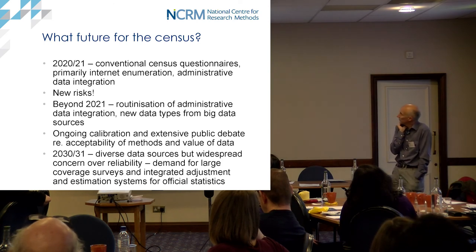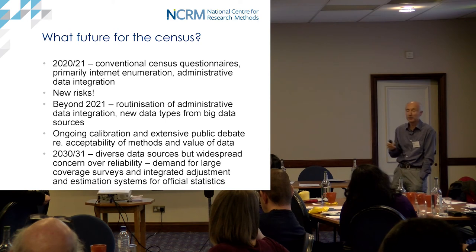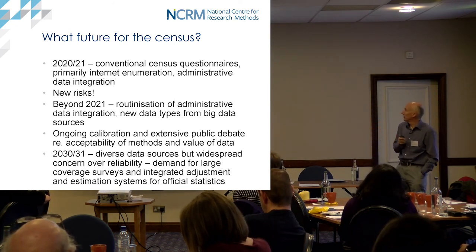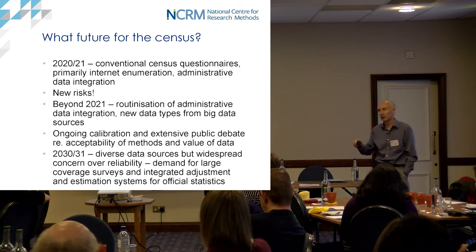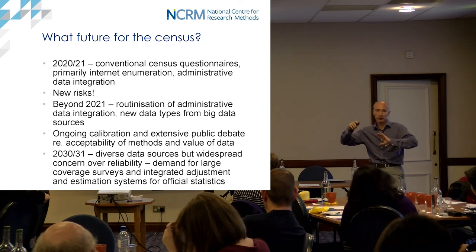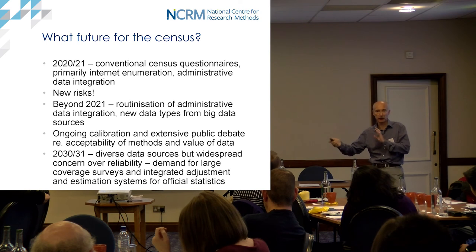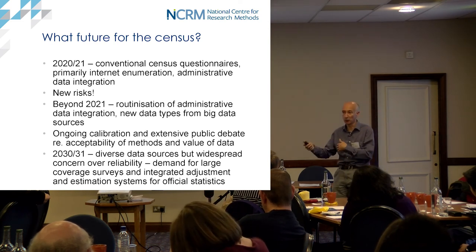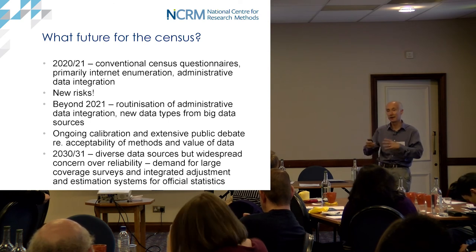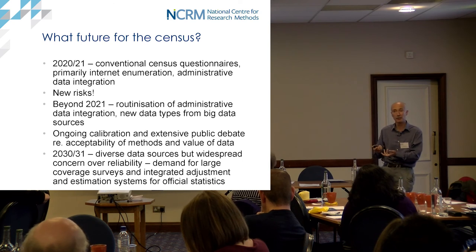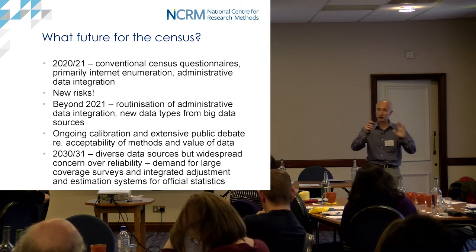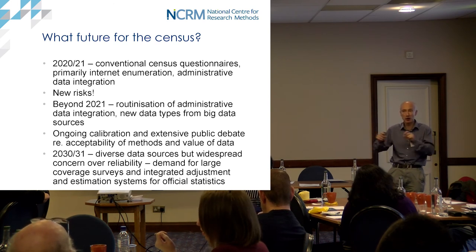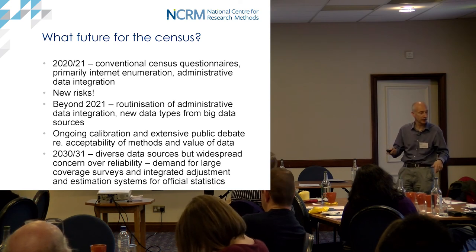So: 2021 gives us a fairly conventional census questionnaire but mainly enumerated online, admin data integrated, and some big risks which ONS are working on. That really brings a routinisation of admin data integration. Where government departments and ONS get to in their comfort zone and success levels for 2021 is the single biggest driver. Where the 2021 census gets to is likely to set standards and norms which will affect what happens when any of us talk to departments that hold those data for future linkages.